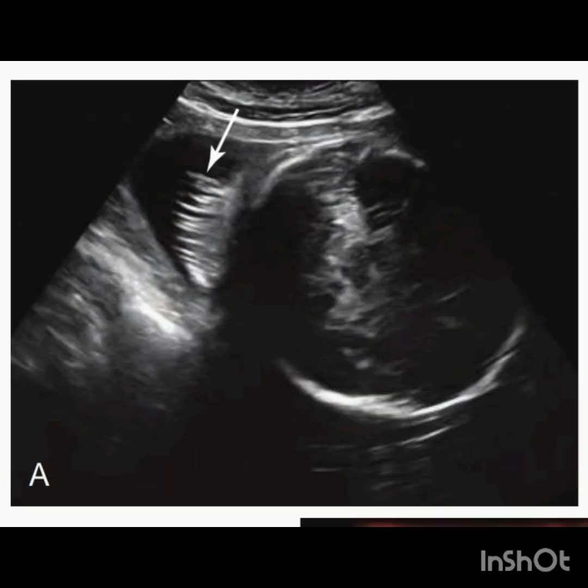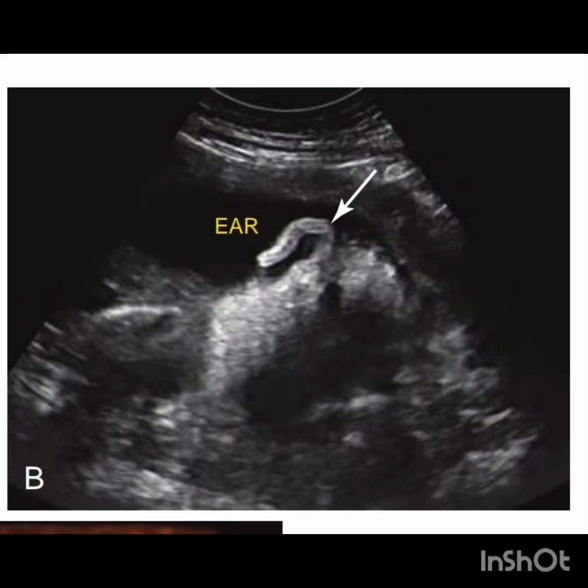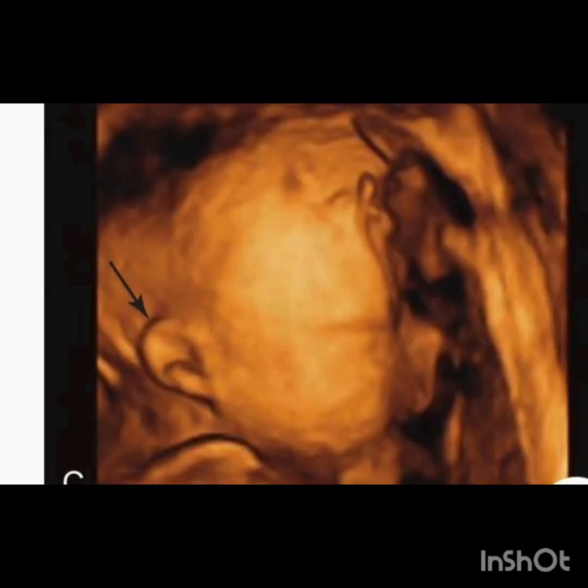These echogenic strands are basically fetal hair extending into the amniotic fluid from the head. This image demonstrates normal fetal hair in grayscale ultrasound, and this image is the 3D ultrasound image of the fetal hair.